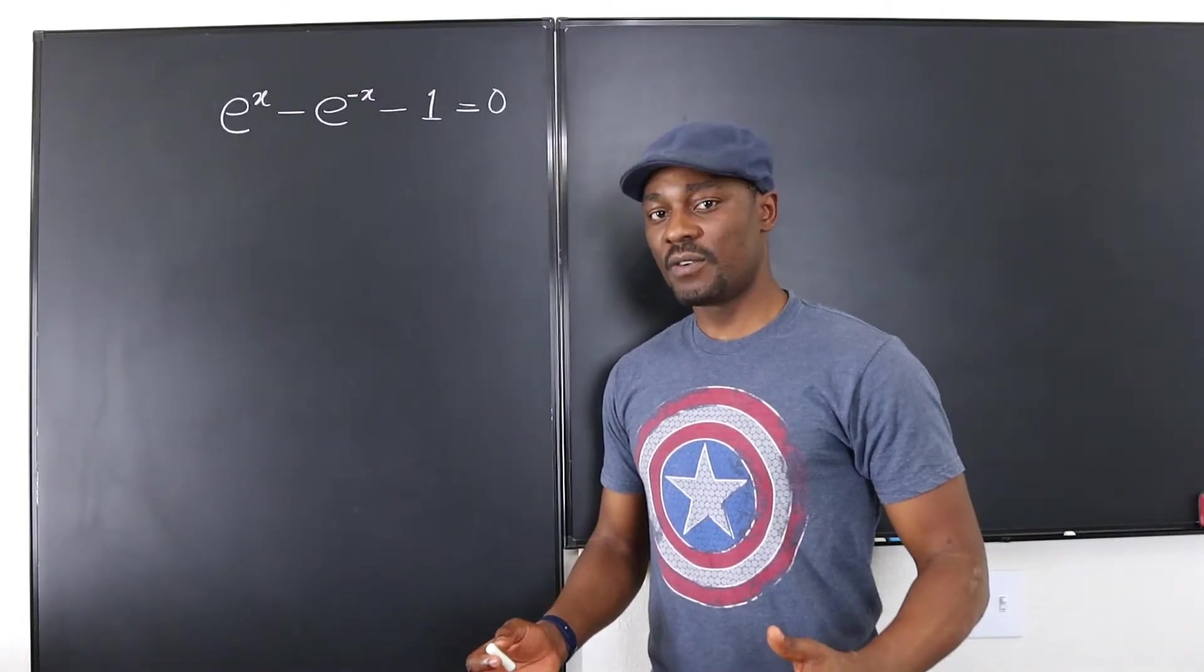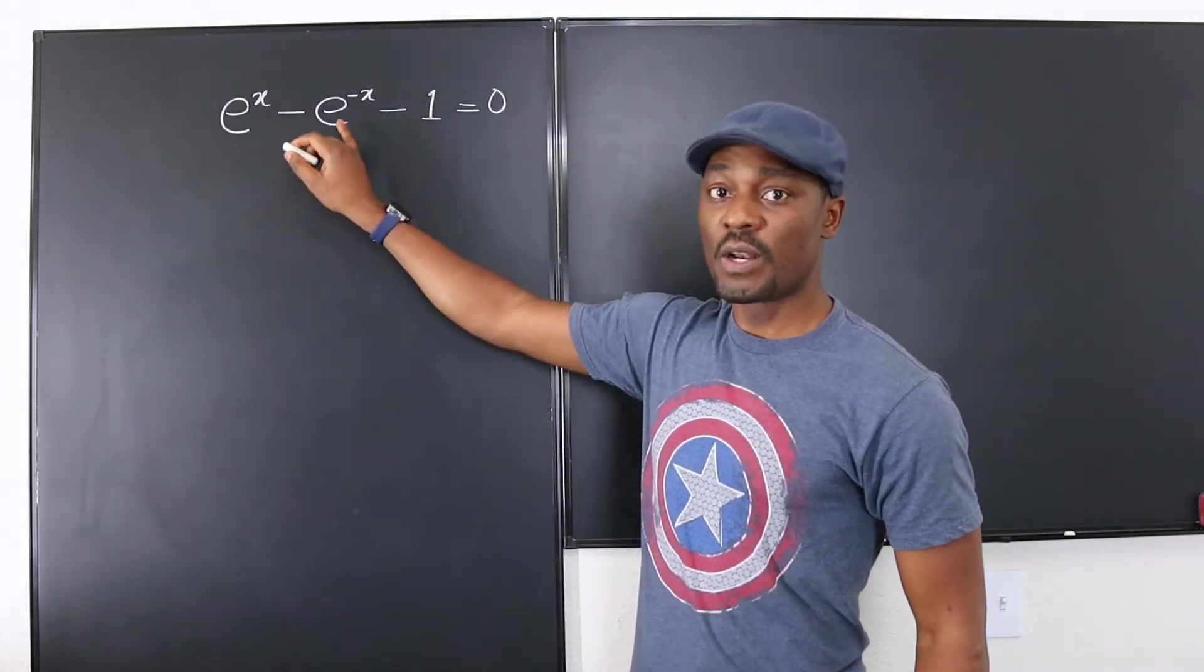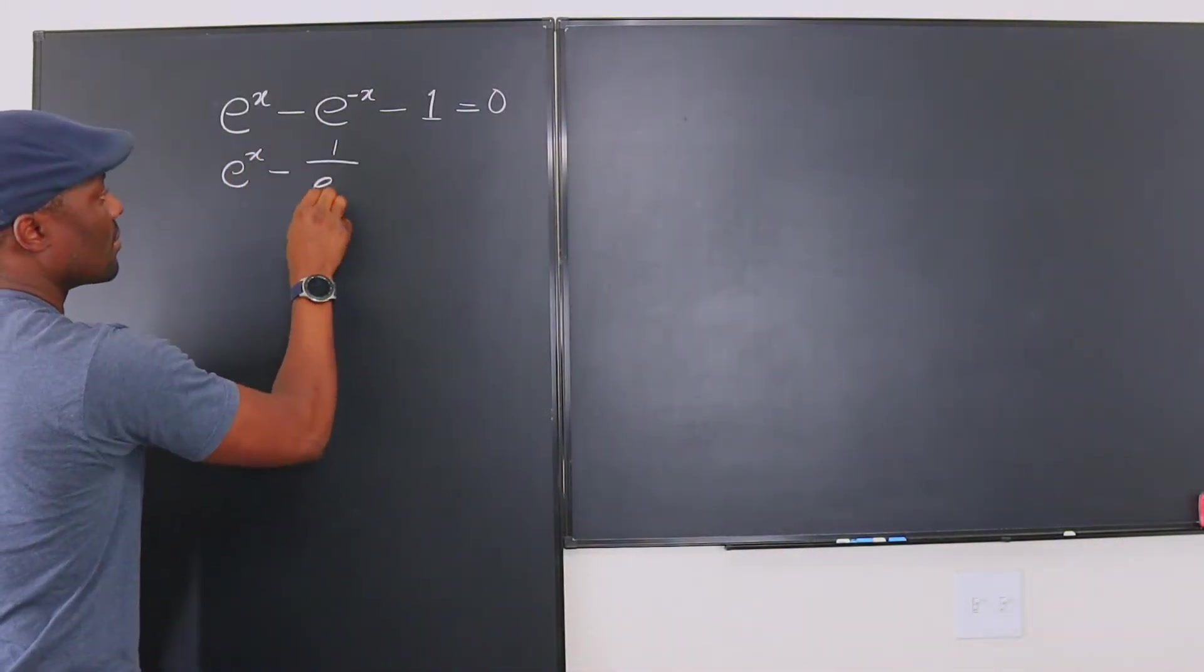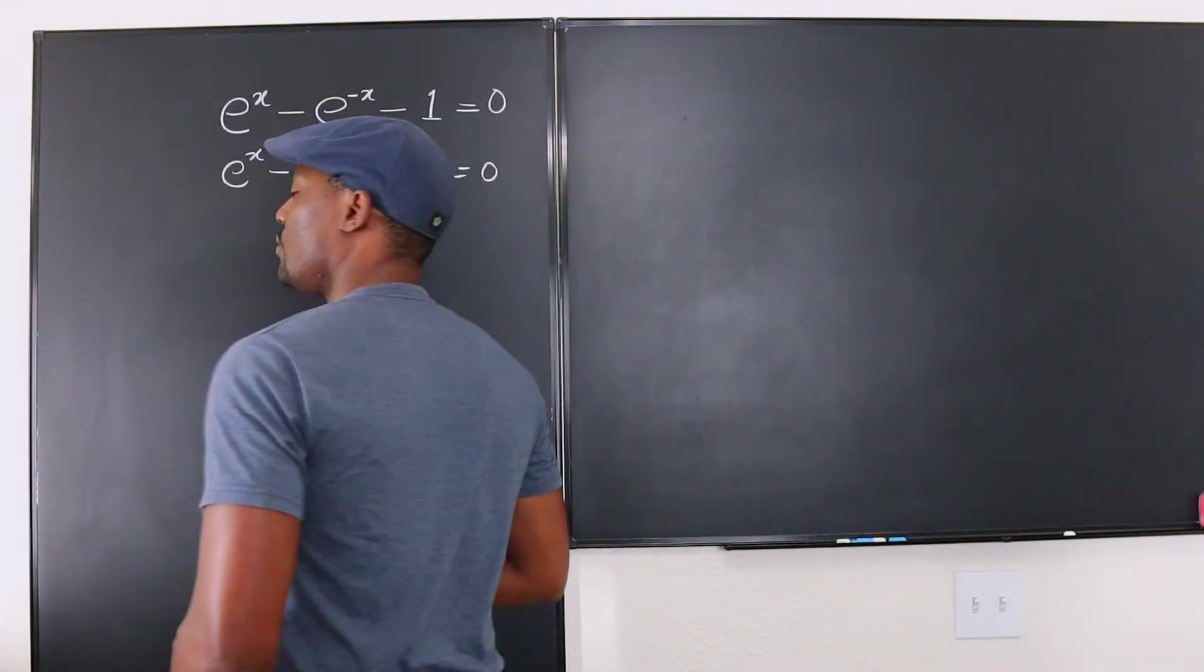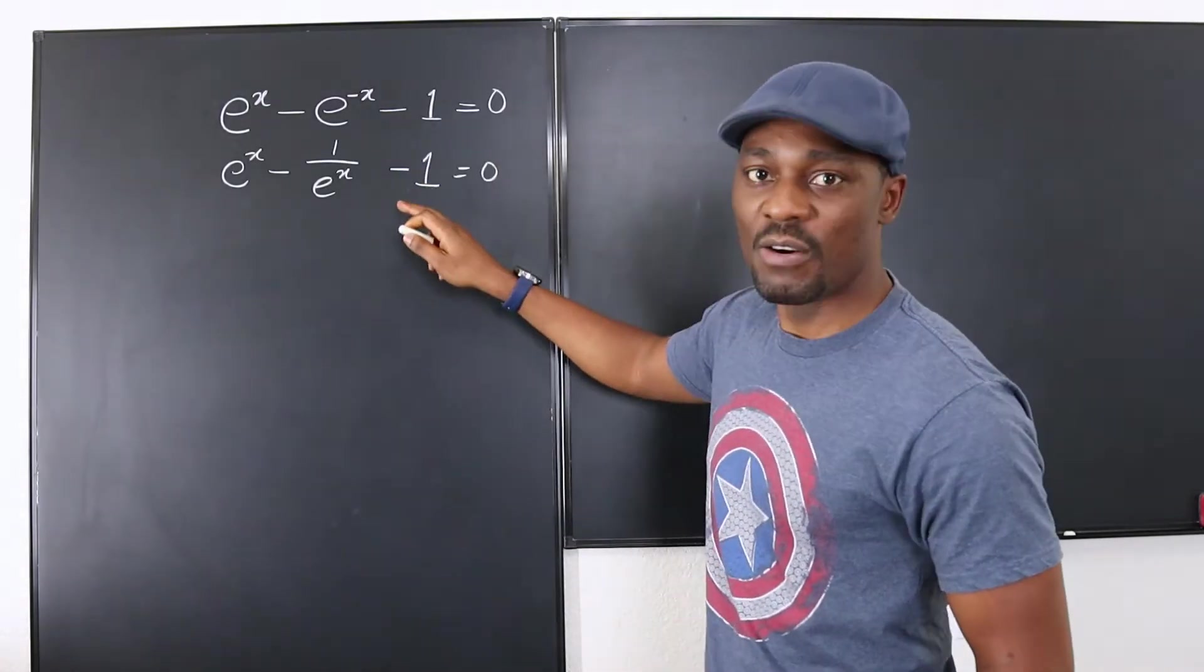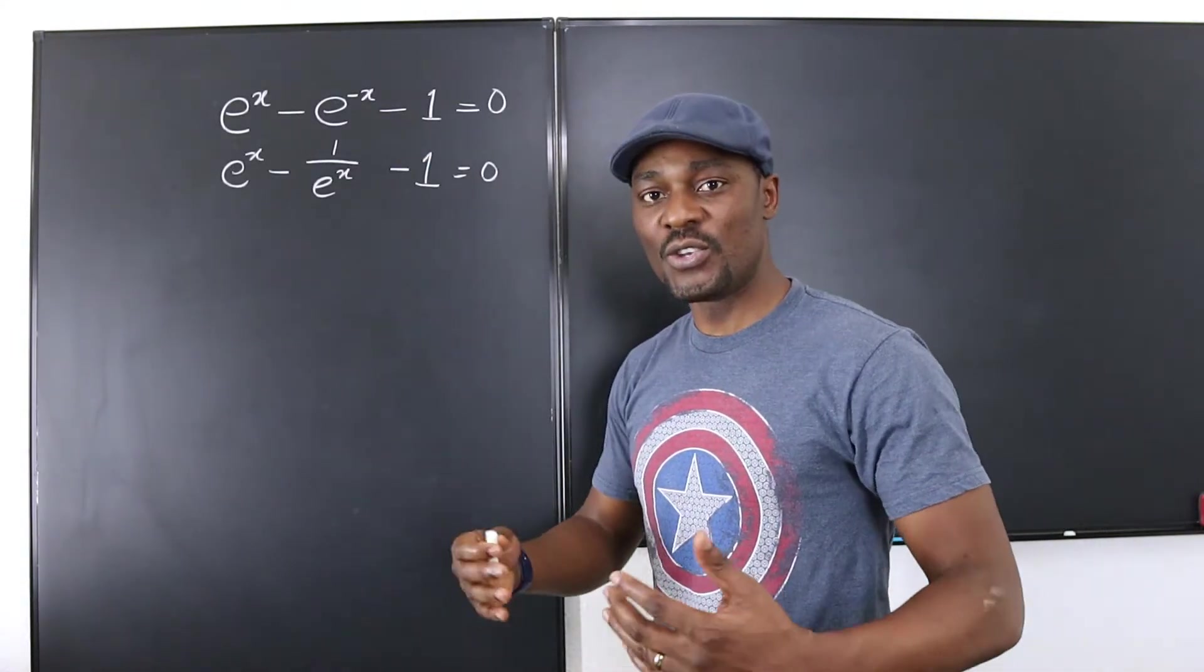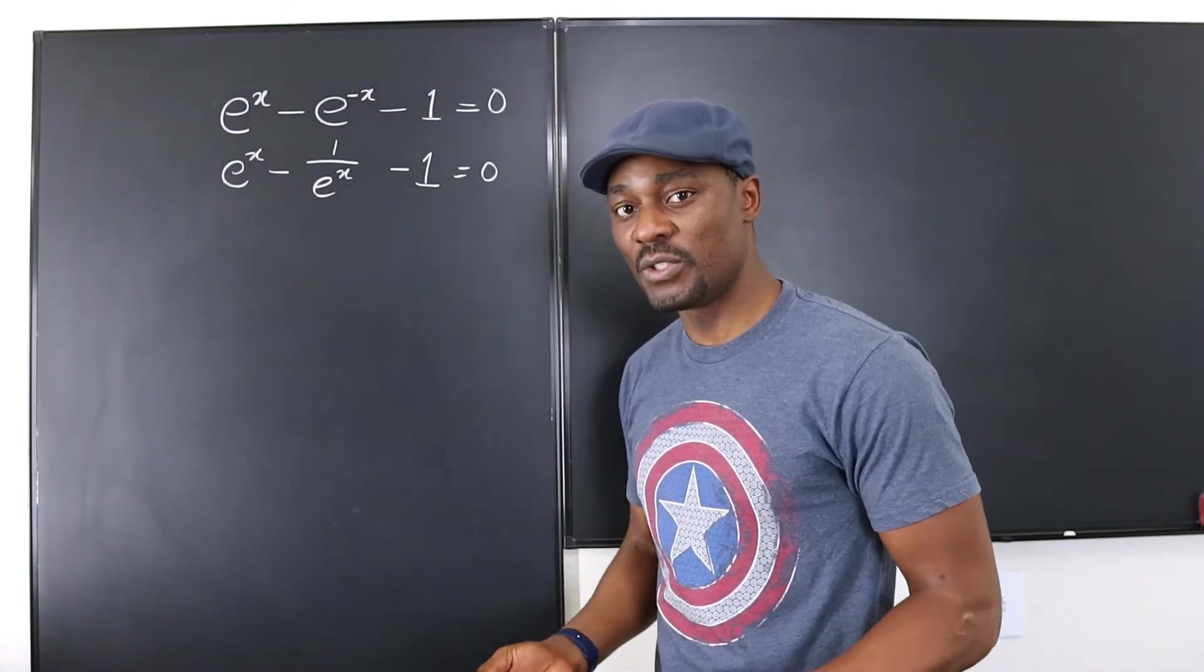This is the very first thing to do. You're going to rewrite this as 1 over e to the x. And let's see what that looks like. Equals 0. Now some people will try to rewrite this as e to the 0. It doesn't help. So just with practice you'll get used to how exponential equations appear and what you're supposed to do.